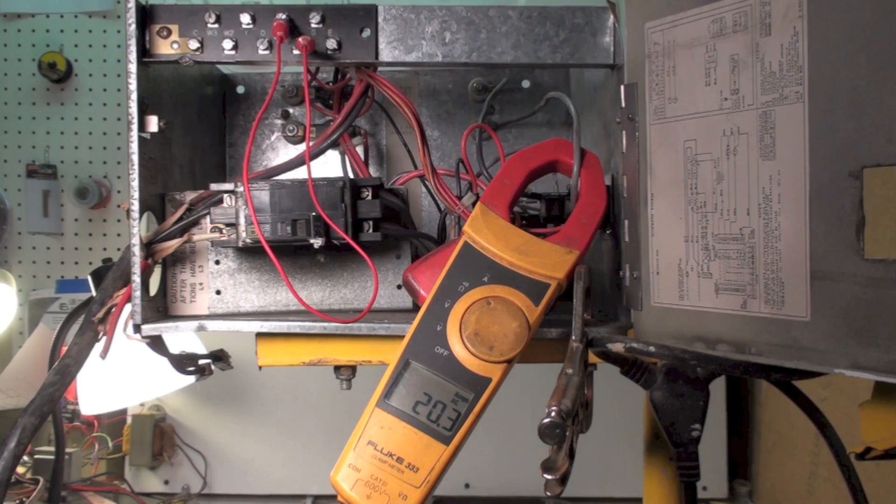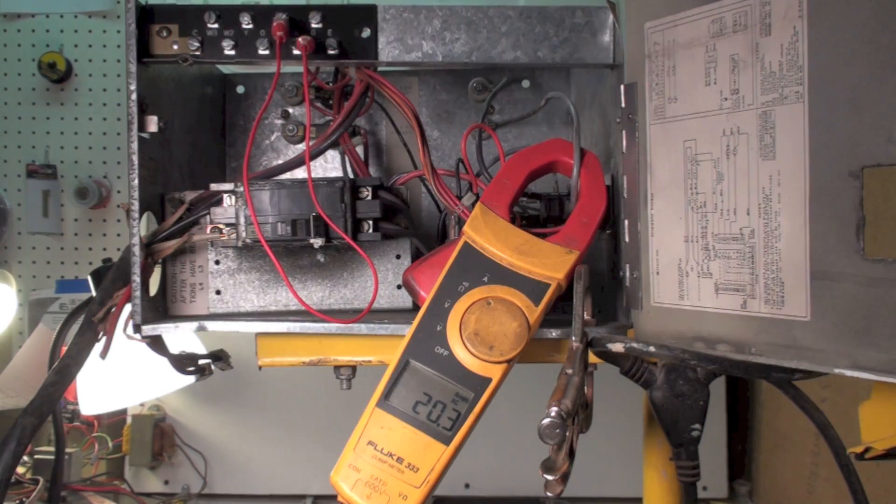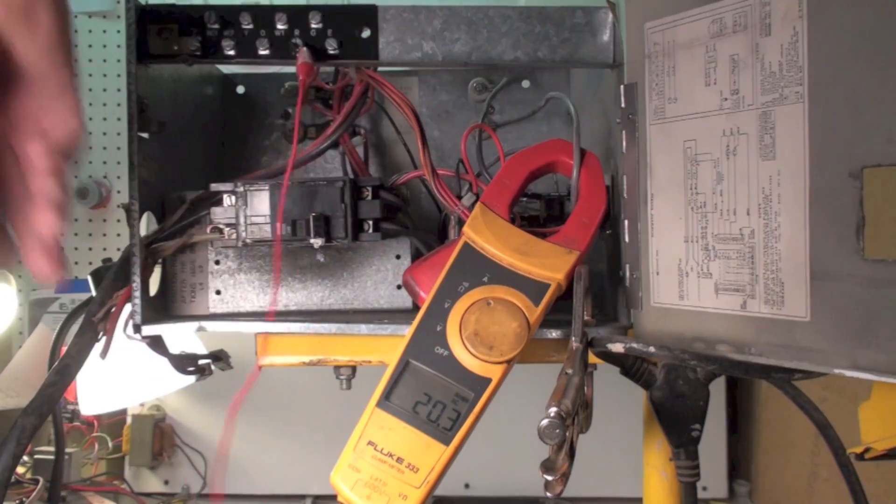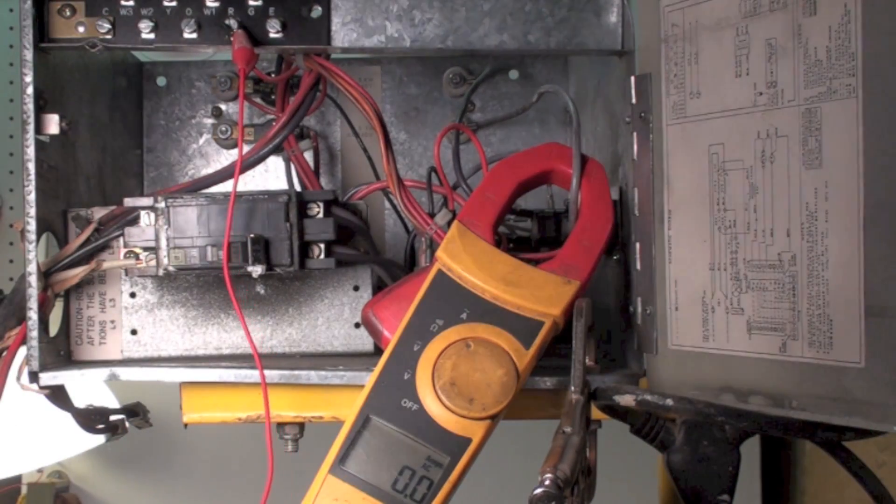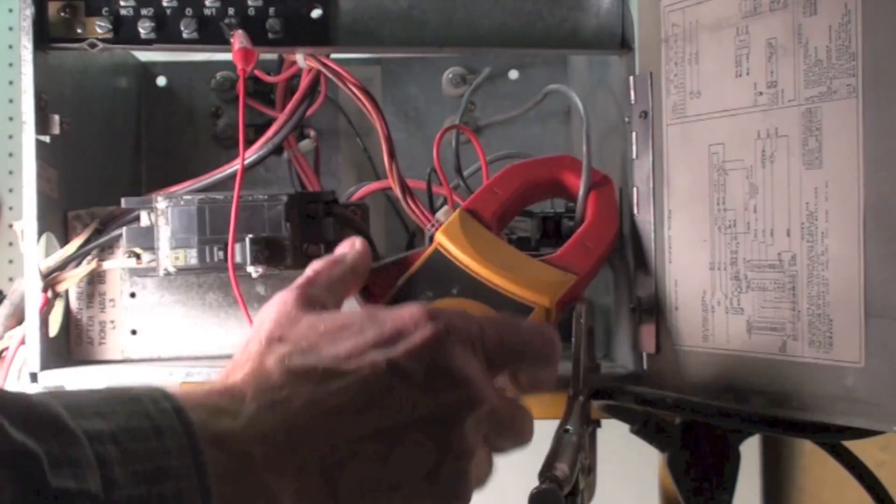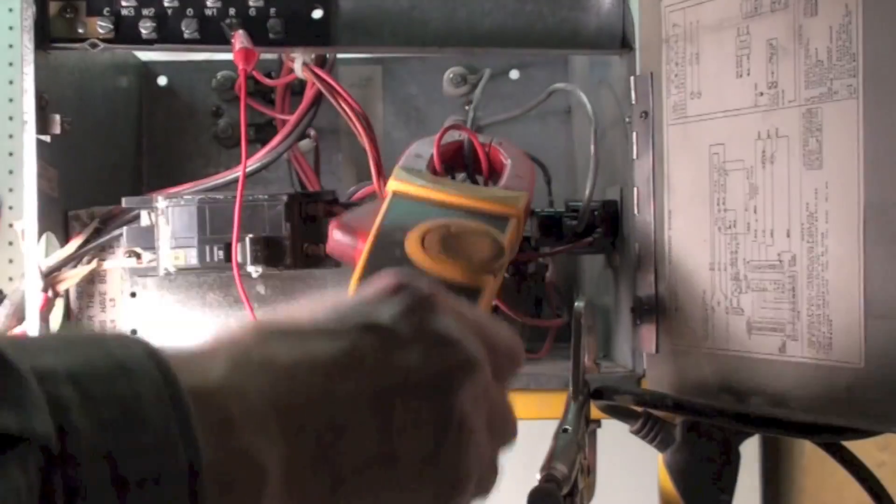So this furnace has cycled on. Now if I want to watch it cycle off I disconnect, and my first one already dropped out. So I take my clamp meter and I go to the other one.